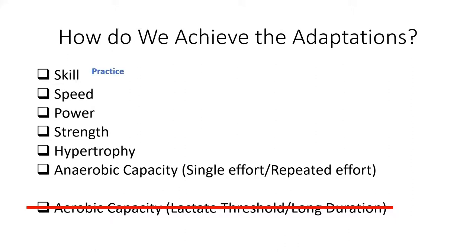How do we achieve the adaptations? Skill comes from practice, focusing on executing whatever skill we're trying to develop with focused effort — movement, accuracy, and precision. Speed comes from moving fast. If you're trying to develop faster sprint speed, you cannot practice your sprints at under 92% of your maximum for that distance. If you're training underneath that, you're practicing running slower and your body's not going to get faster — it may actually get slower. You have to move maximally fast using low or negative loading, basically getting assisted movement so you're moving faster than you could on your own. You cannot move slow and develop speed.